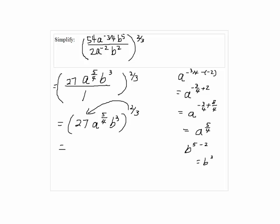Now, we are going to distribute 2/3 to each factor. So, we have 27 to the 2/3 times a to the 5/4 times 2/3 times b cubed times 2/3.